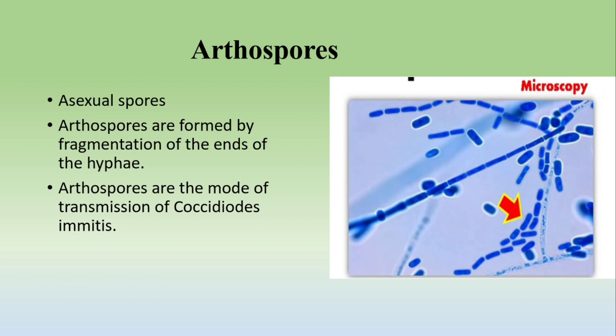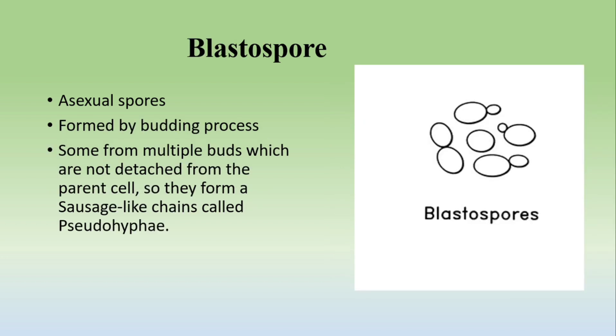The fourth type are arthrospores. Arthrospores are also asexual spores and are formed by the fragmentation process. As seen in the diagram, a long hyphae fragments into different parts, and these parts eventually develop into new hyphae. Arthrospores are the mode of transmission of Coccidioides immitis species.